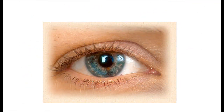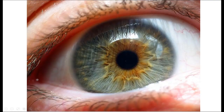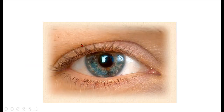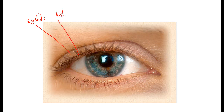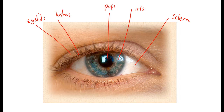This shows the eye from the front — the structures we can see. There are eyelids and eyelashes to protect it. The white outer coat is the sclera. The colored part controlling the amount of light entering is the iris. The pupil is the black central part. One side appears white while the other is transparent — that transparent part is the cornea.